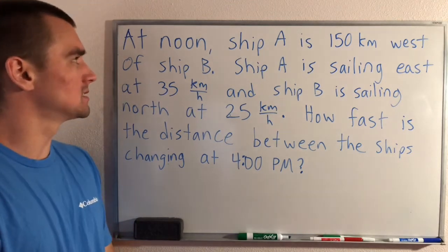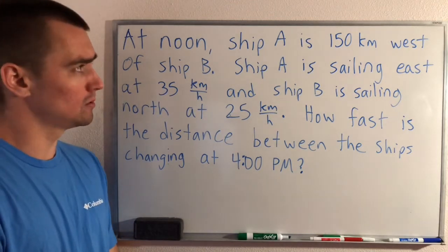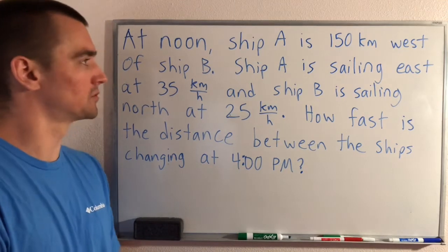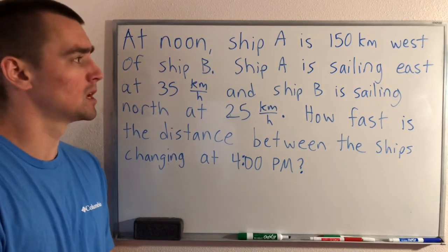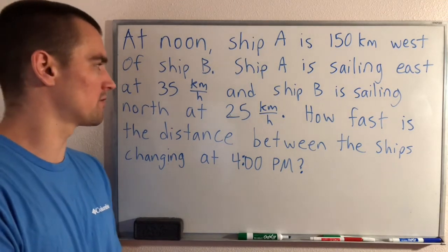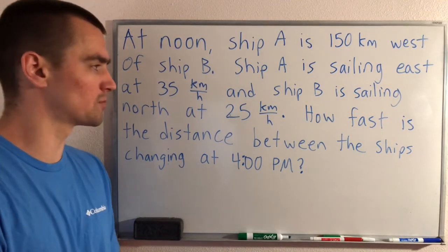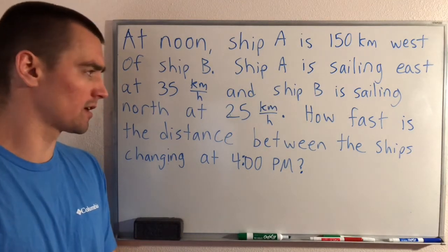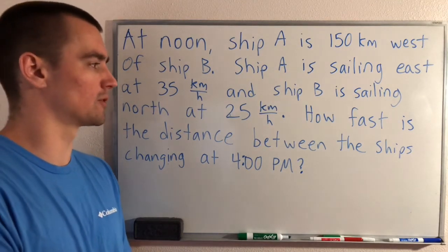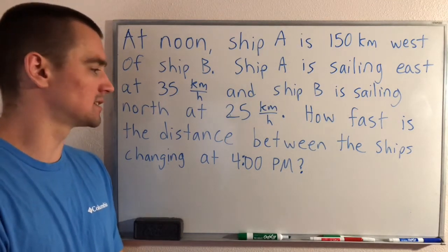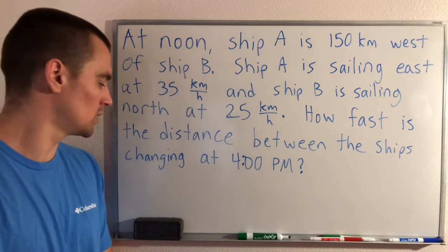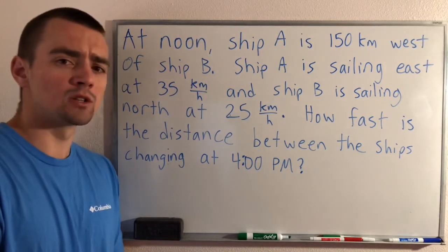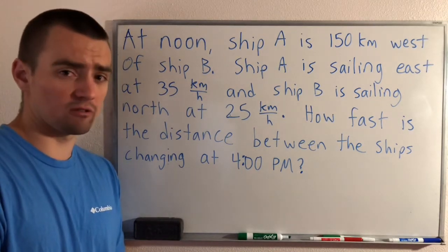The problem we have today is: at noon, ship A is 150 kilometers west of ship B. Ship A is sailing east at 35 kilometers per hour and ship B is sailing north at 25 kilometers per hour. How fast is the distance between the ships changing at four o'clock PM?